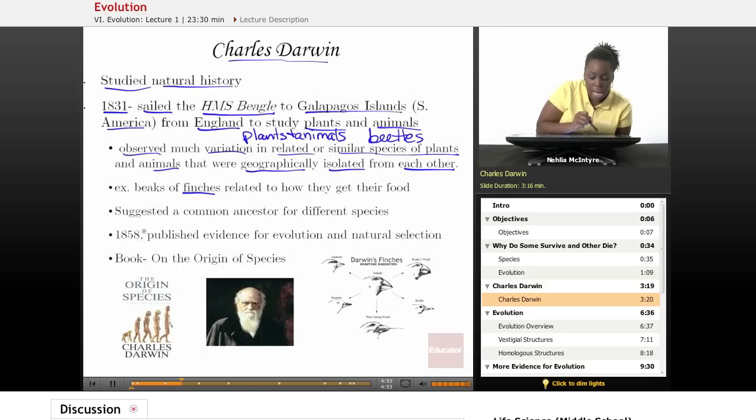One of the types of animals that he studied were the finches. They're birds. And what he found was that the finches on the Galapagos Islands had a variation that you could see in their beaks. And those finches, they were the same species that were found on the mainland of South America, but their beaks were very different. And he saw that there were several different types of beaks or shapes of beaks of finches. And it related to how those finches got their food.